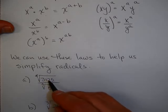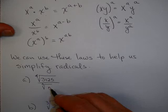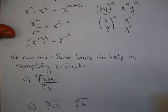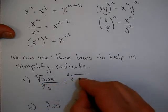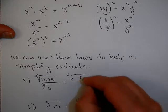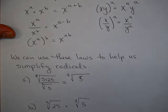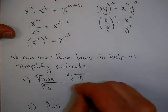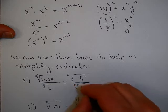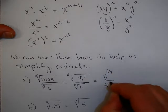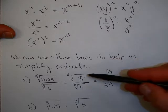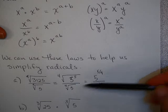The fourth root of 3,125 over the fourth root of 5. There's lots of ways to do this problem, but here's one way. The fourth root of 3,125. 3,125, by the way, is 5 to the 5th power. So we can write this like this.